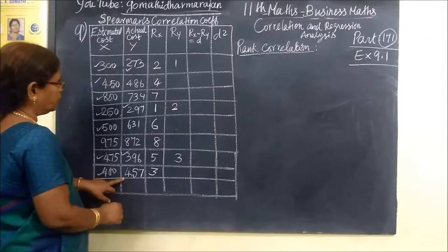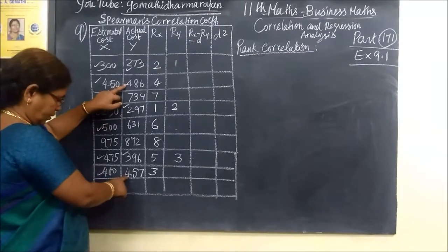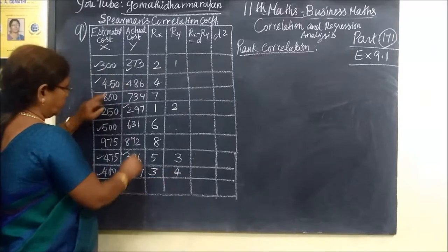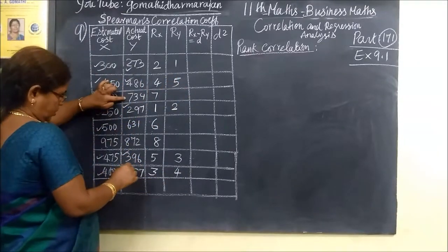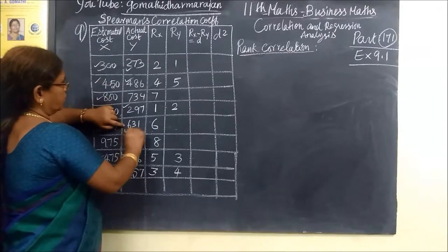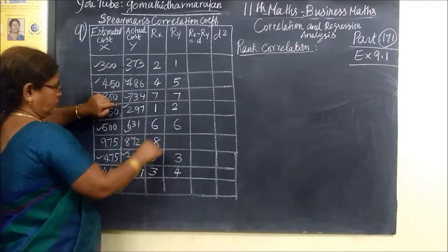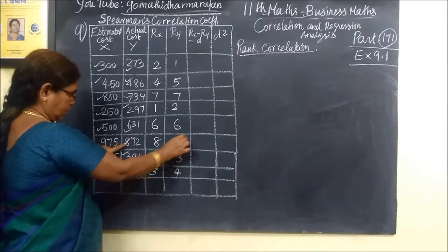Then 386 is... this is 4. Then 5 and then 6. Then 7. Last one is 8.